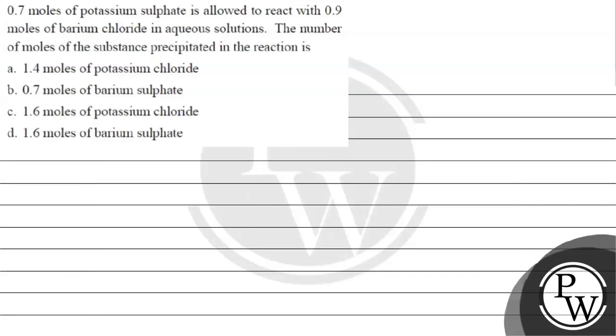Hello Bacho, let's read this question. The question says 0.7 moles of potassium sulfate is allowed to react with 0.9 moles of barium chloride in aqueous solutions.